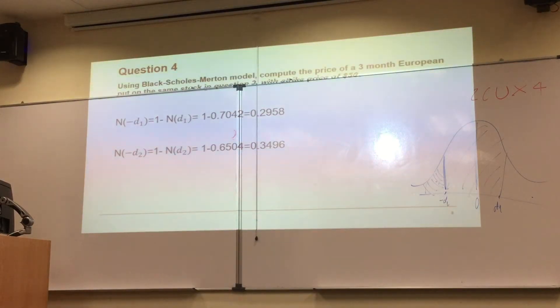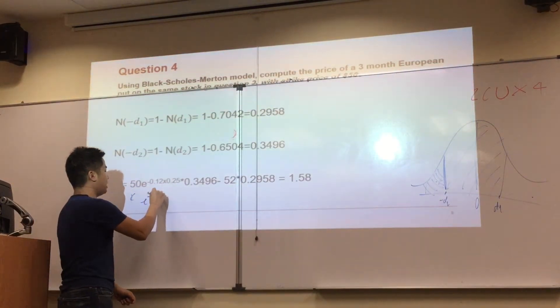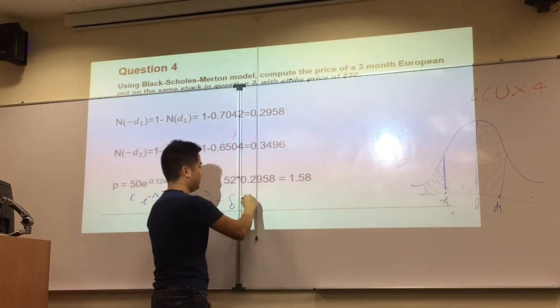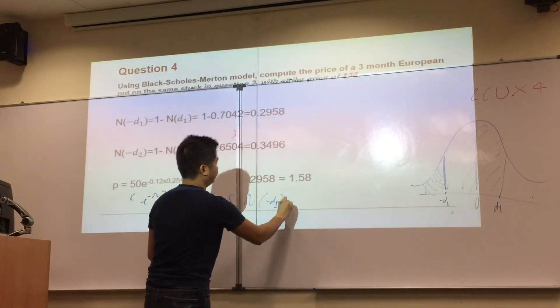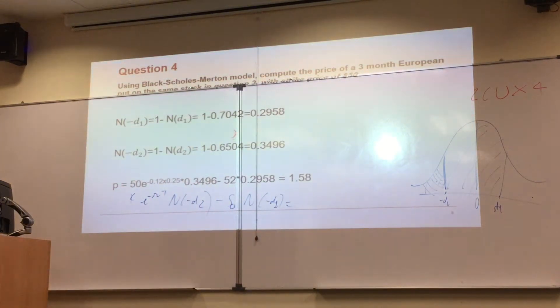And for calculating P, simply put it into the formula. This is K e to the minus RT times N of negative D2, minus S0 times N of negative D1. So you just put the value into the formula. Very simple.